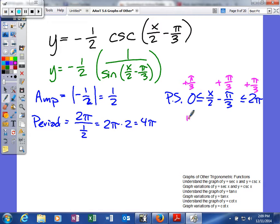When you do that, you're going to get π/3 less than or equal to x/2, which is less than or equal to, this is going to be thirds, 6/3. Add one to it, and you get 7π/3.